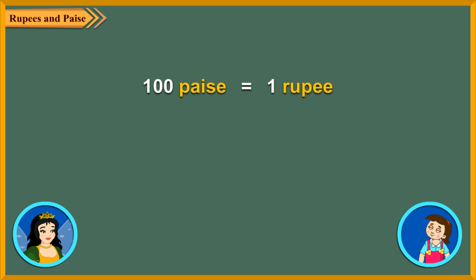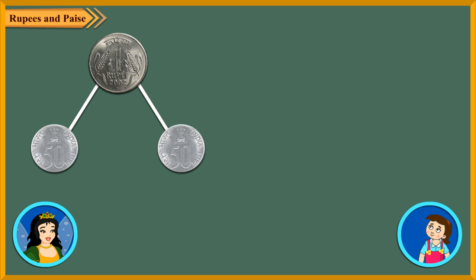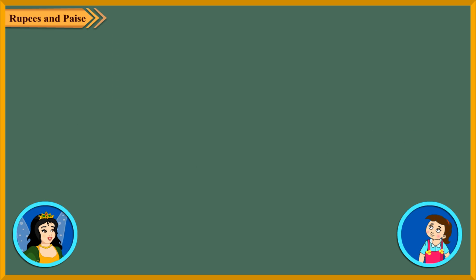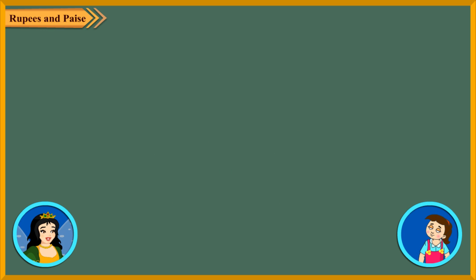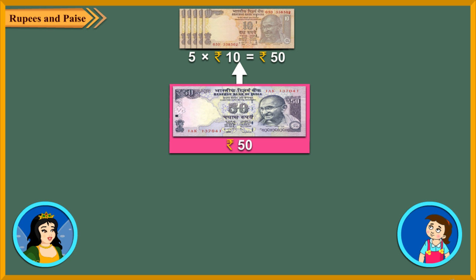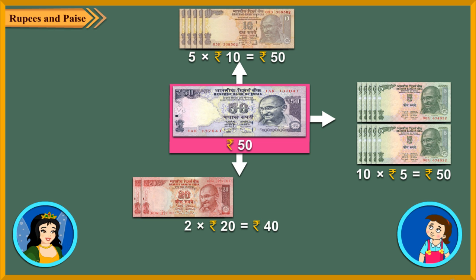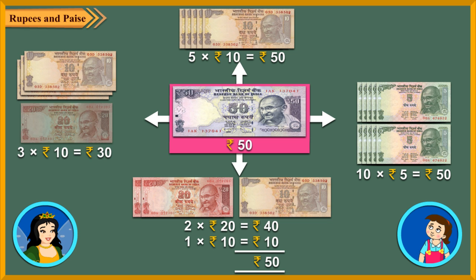100 Paise make 1 Rupee. It means if we have two 50 Paise coins, we can get 1 Rupee coin or a 1 Rupee note for these. And if you want to pay 50 Rupees, you can do it in a number of ways. Some of these are: 5 notes of Rupee 10, 10 notes of Rupee 5, 2 notes of Rupee 20 and 1 note of Rupee 10, or 3 notes of Rupee 10 and 1 note of Rupee 20.